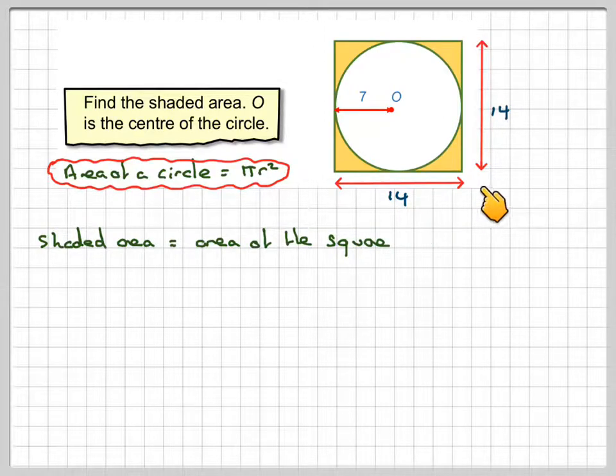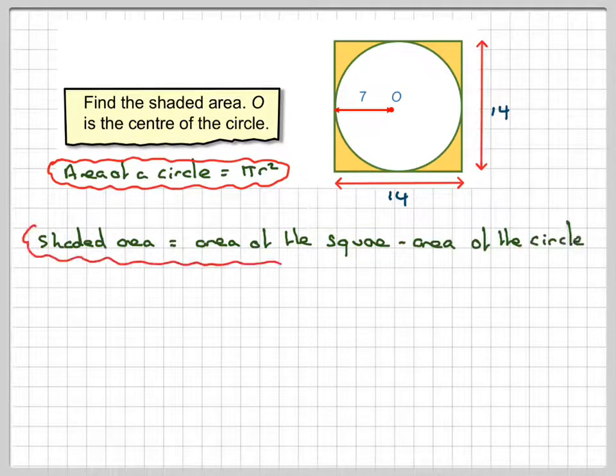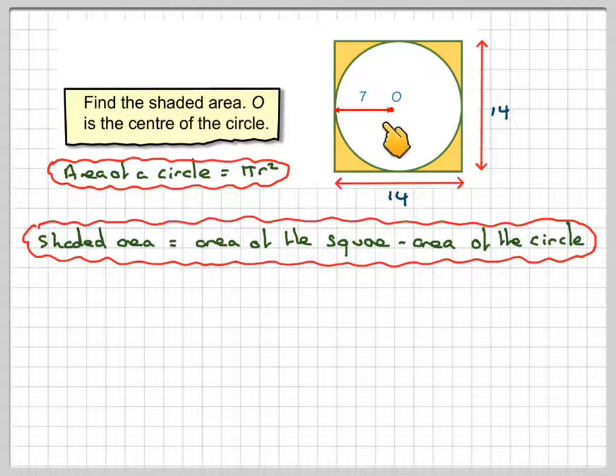So we know that this is 14 and this is 14, minus the area of the circle which we can find just from its radius.